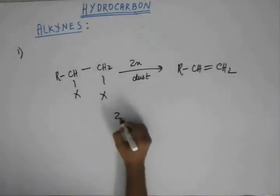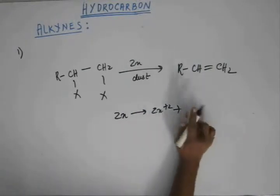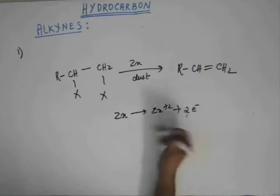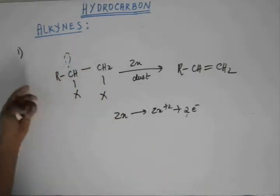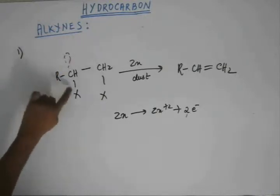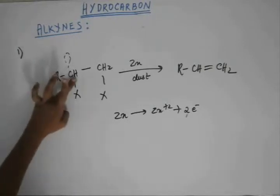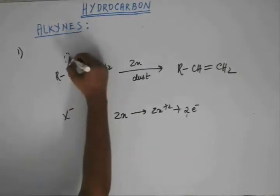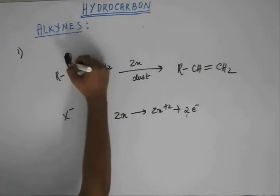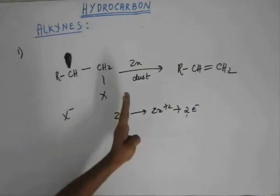The reason zinc dust gives us an alkene is that one zinc atom loses two electrons. Those electrons go into the antibonding orbital of the carbon–halogen bond. When one electron goes into the antibonding, one electron from the bonding comes out; when two electrons go into the antibonding, two electrons from the bond come out, and X⁻ is expelled. This represents a completely filled antibonding molecular orbital.